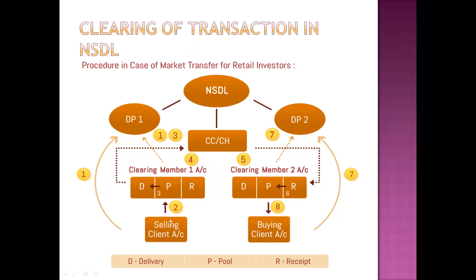Whenever the sale or purchase of a security happens in the stock exchange through clients, there is a selling client and a buying client. The selling of a security cannot be made directly by an individual to the buyer — normally the buyer doesn't know who the seller is and the seller doesn't know who the buyer is. The transaction happens through the clearing member, also known as the broker. The seller puts a bid of sale through the broker, and the buyer puts a bid of purchase.